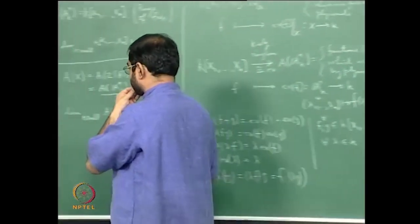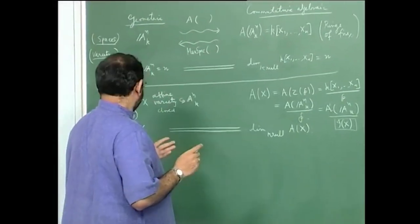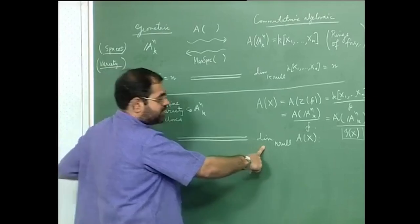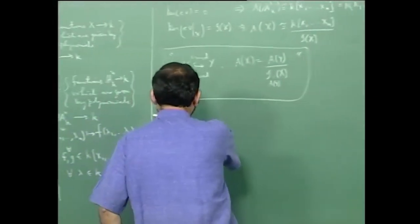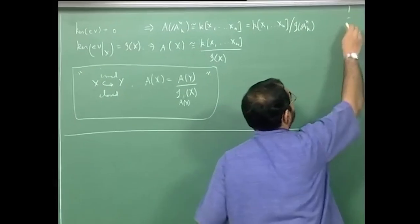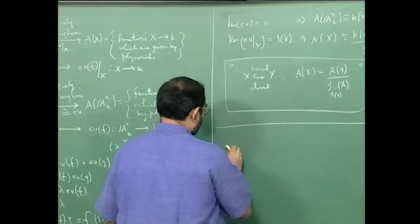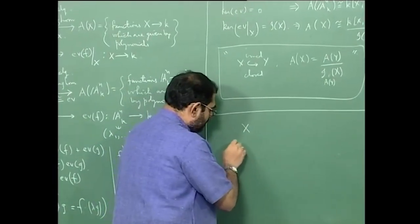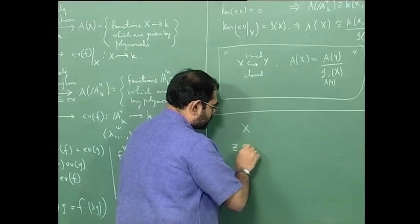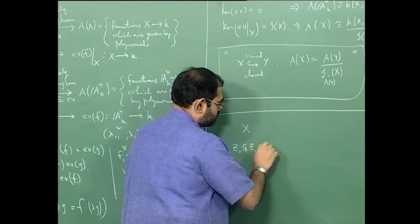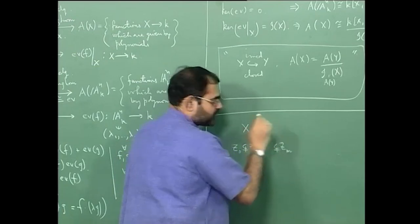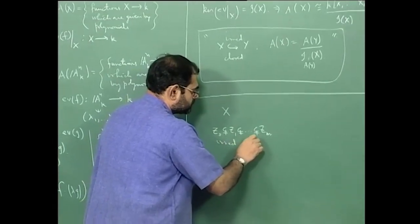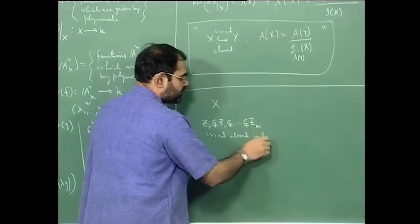This isomorphism signifies that difference, but then one forgets it and by abuse of notation keeps writing equals. Now I want to explain why the topological dimension and the Krull dimension are one and the same. That is quite clear: if you take X and give me a sequence of irreducible closed subsets in X — these are all irreducible closed in X.